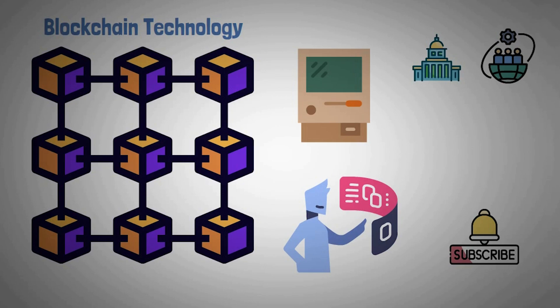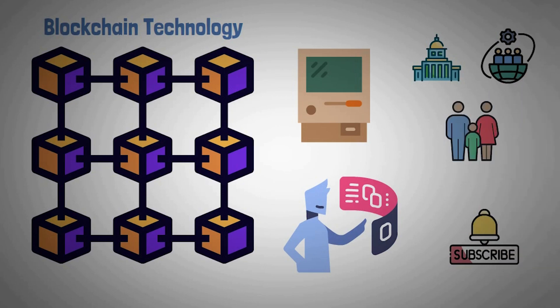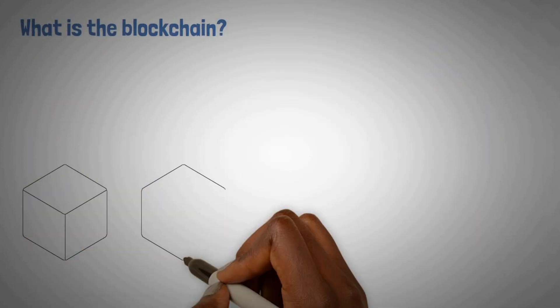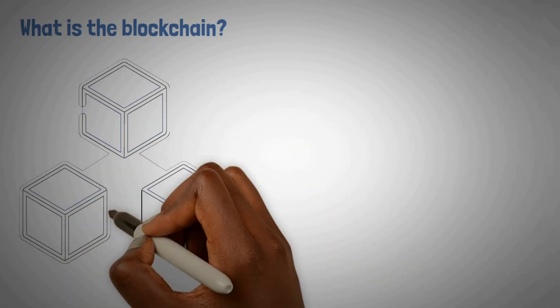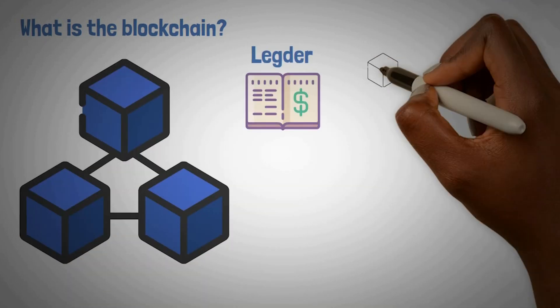Before we get started though, there is something that we need to understand. What is the blockchain? We talked about in our previous video, a blockchain is a continuous record of data consisting of blocks that are linked and secured using a cryptography method called hashing.